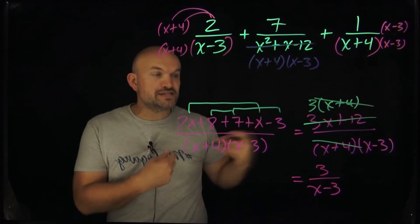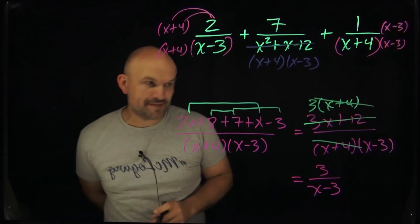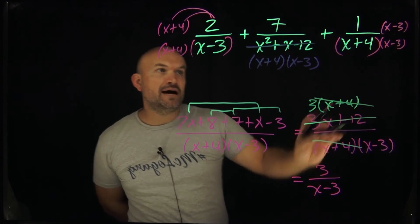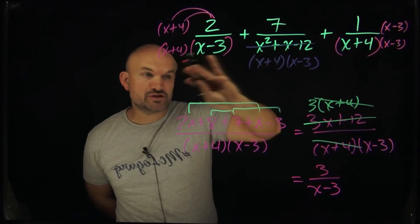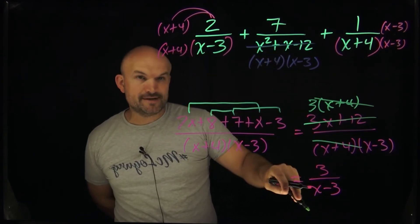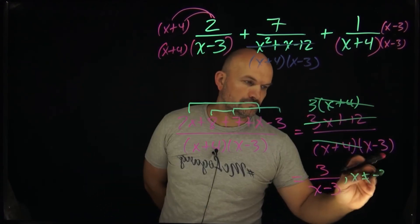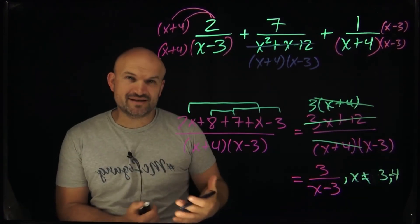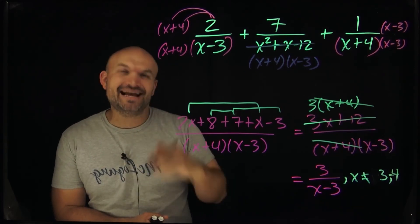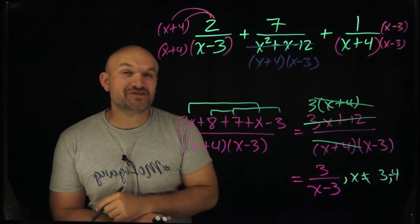If we want to include the excluded values — the values not part of our domain — those are the values that make the original denominators equal to zero, going all the way back to the original equation, not the simplified one. That's going to be x equals 3 and x equals negative 4. I like this question for maybe a quiz, but in the next video I'll show you a similar problem that I'd give students on a test. See you in the next video.